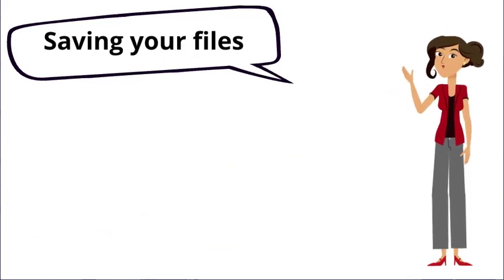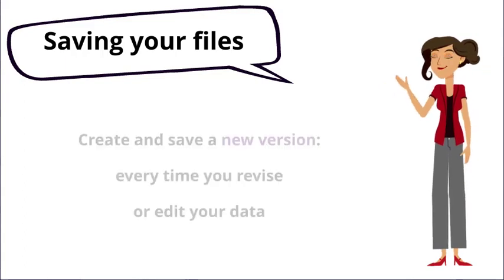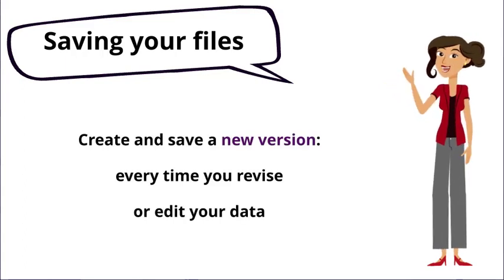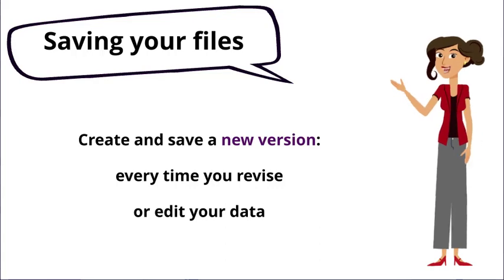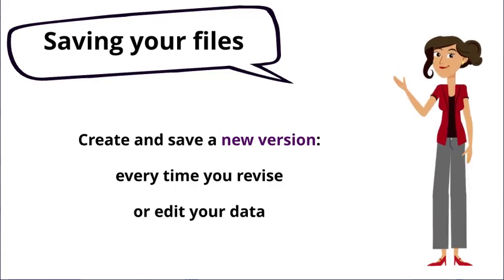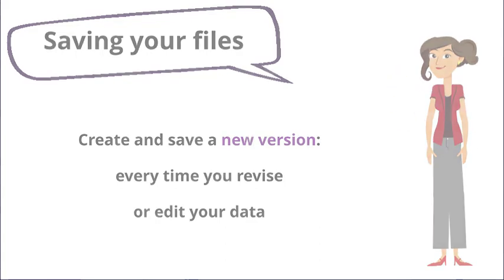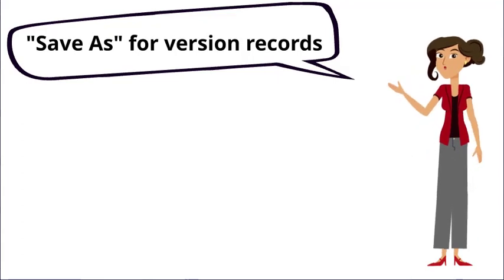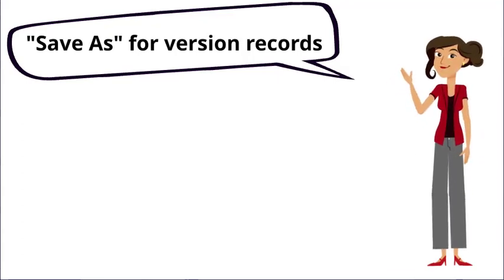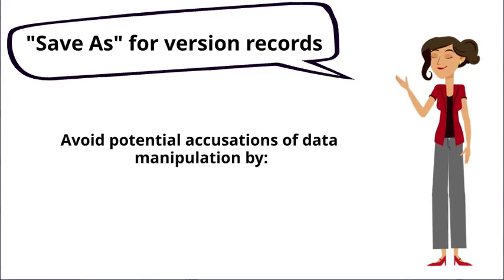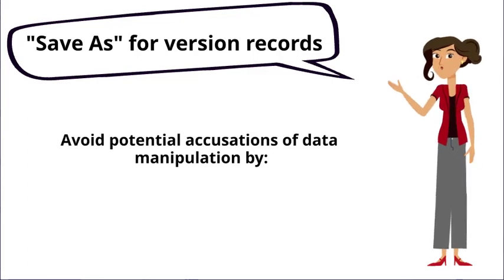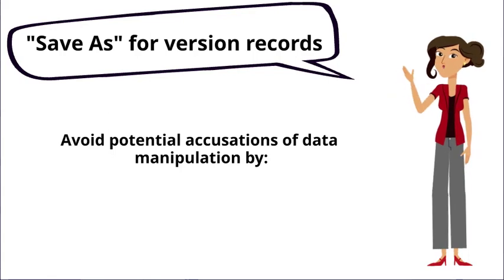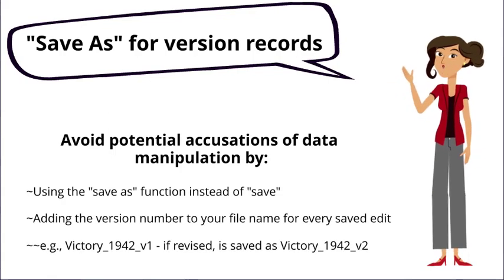Now, there's one last but important practice you should adopt when it comes to saving your files. Make sure you create and save a new version every time you revise or edit your data. Other researchers will struggle to reproduce or replicate your results if you haven't made clear all the ways in which your original datasets were revised over the course of the project. If you don't, you could be subject to accusations of having secretly manipulated your data to support false research findings. To avoid this, always use the save as function and add the version number to your file name every time you make an edit.